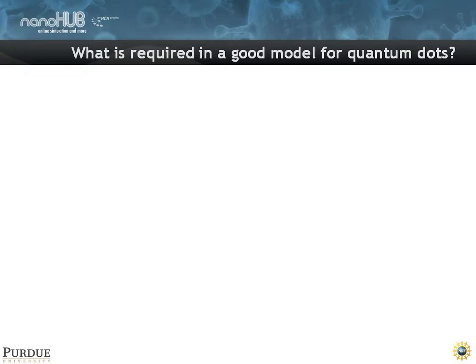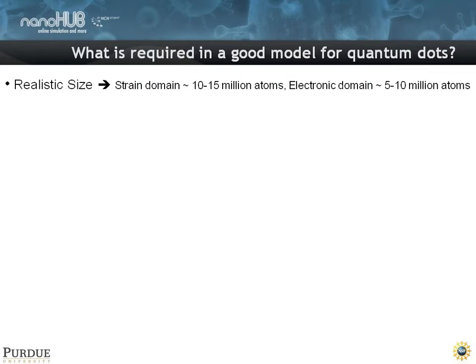And what is required if you want to do a good quantum dot model? You want to have a realistic size. So if you want to do these self-assembled dots, the strain domain is actually very large. You've got to have something like 10 to 15 million atoms in your simulation domain. That's pretty big. And your electronic domain might be 5 to 10 million atoms.